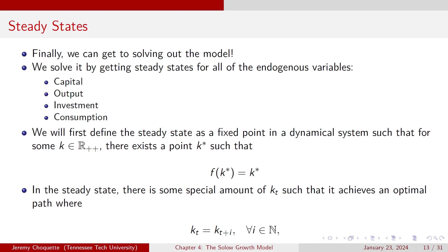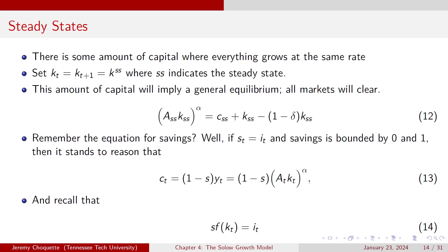Now we can solve the model by finding steady states for all the endogenous variables: capital, output, investment, and consumption. Recall the fixed point concept from dynamical systems — this is where it becomes crucial. For a steady state to exist, there's some point k* such that f(k*) = k*. In the steady state, there's some amount of capital achieving an optimal path where k_t = k_{t+i} for all natural numbers i. There's some amount of capital where everything grows at the same rate, and you can set k_t = k_{t+1} = k_ss.